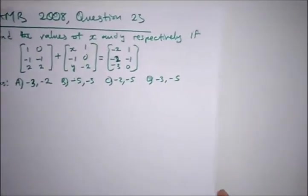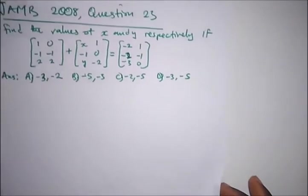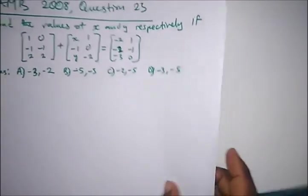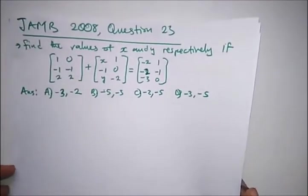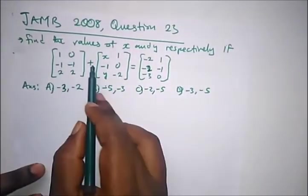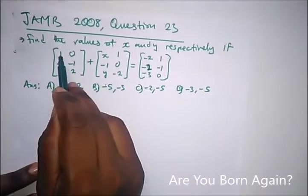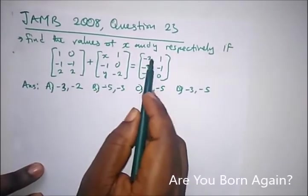2008 question 23 says find the values of x and y respectively if we have this matrix addition operation between these two matrices. This is the answer, so we have 1 plus x equal to minus 2.